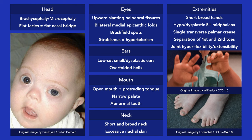These are some of the more common external dysmorphic features in patients with Down syndrome. It is important to keep in mind that many other internal malformations and comorbidities may also be present.